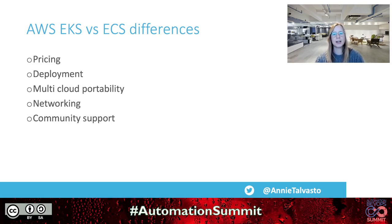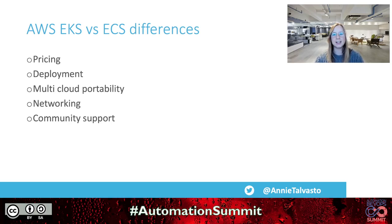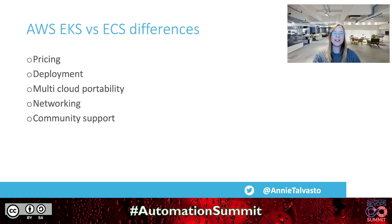On deployment: ECS is very simple — it was designed to be a simple API for creating containerized workloads without complex abstractions. Once your cluster is set up, you configure and deploy tasks directly from the AWS management console. Deploying on EKS is more complex and requires expert configuration; you need to configure and deploy pods via Kubernetes first, since EKS is just another layer for creating Kubernetes clusters on AWS.